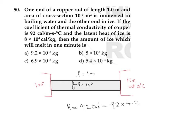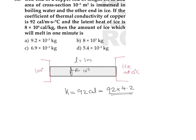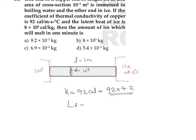So k = 92 × 4.2 joules per meter per second per degree Celsius. The latent heat of ice is given as 8×10⁴ calorie per kilogram, which we convert to SI as 8×10⁴ × 4.2 joules per kilogram.